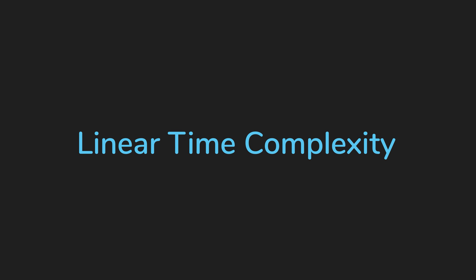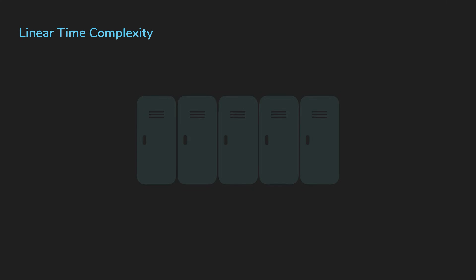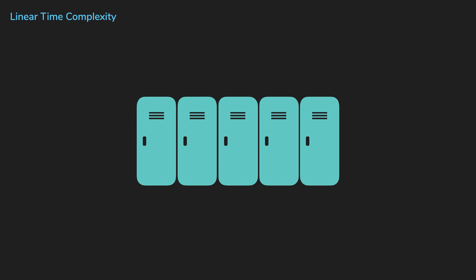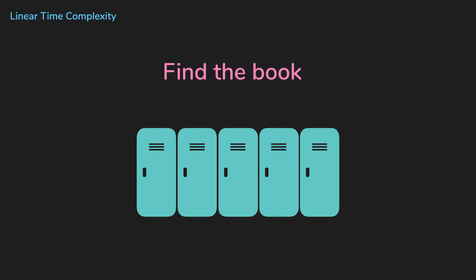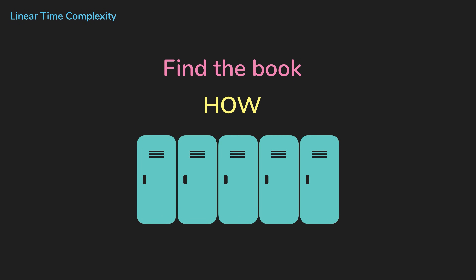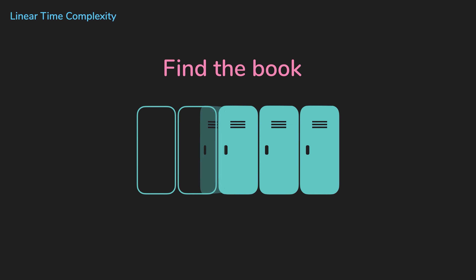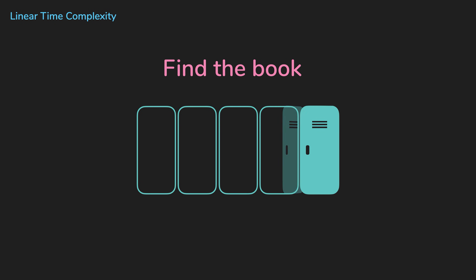Let's say there is a series of lockers and you have a book in one of those lockers. Your task is to find the book, and how you find the book represents the algorithm you're using. For linear time complexity, let's say you have no information about where the book is and you need to look into each locker one by one until you find it.